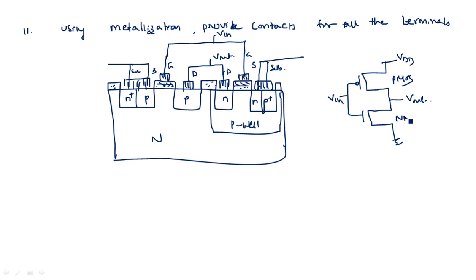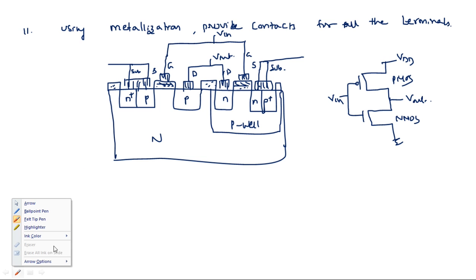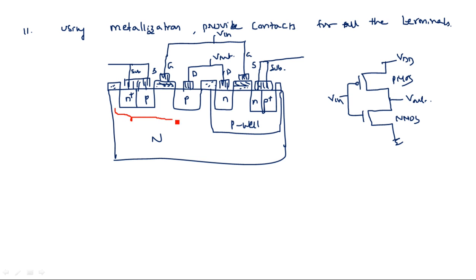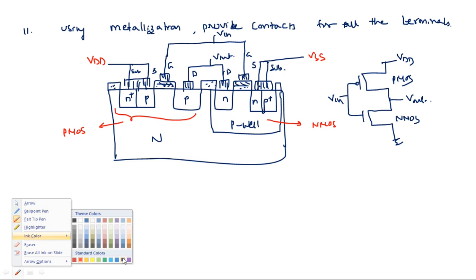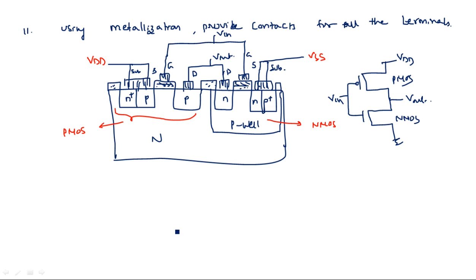This is the PMOS transistor and this is the NMOS transistor. The PMOS transistor should be connected between VDD and output, with source and substrate connected to VDD on the N-type substrate. The NMOS transistor should be connected to VSS — always the NMOS transistor is at ground and PMOS transistor is at the pull-up network, which is VDD. This completes the P-well fabrication steps. In the next video, I will explain the twin-well process.